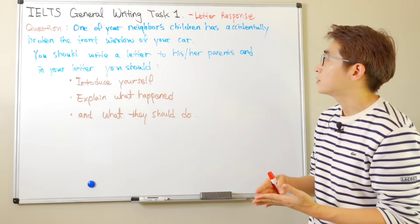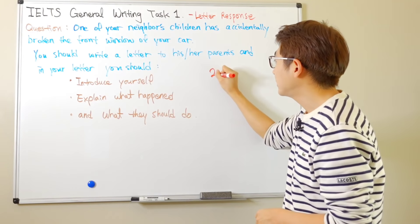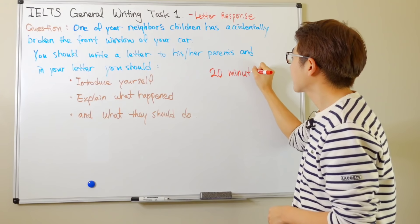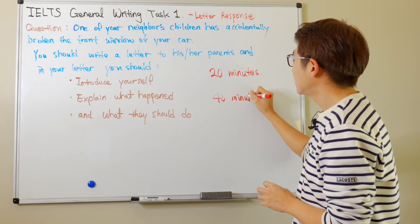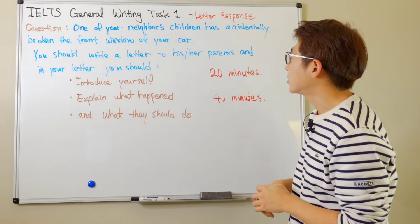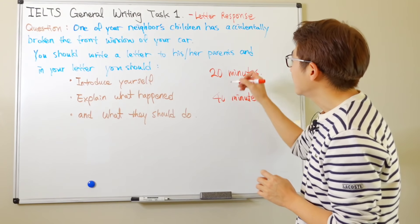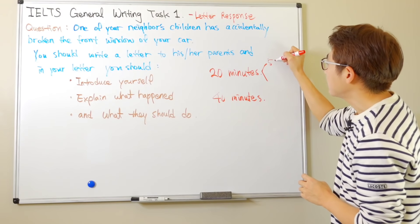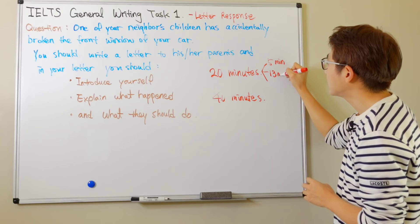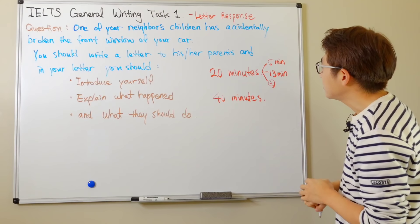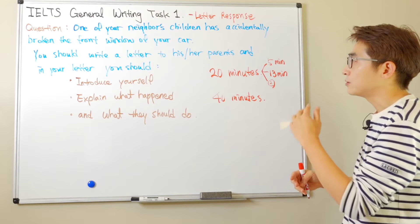For this part of your essay you need to spend about 20 minutes. You should spend 40 minutes for your Writing Task Number Two, so try not to spend more than 20 minutes. With this time, you need to spend about five minutes brainstorming for ideas and you need to do another 13 minutes writing and leave at least two minutes for review and revision.